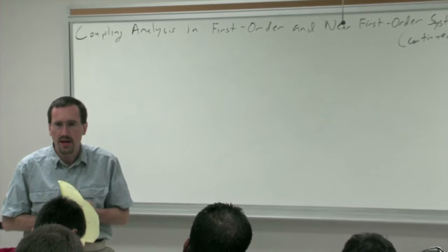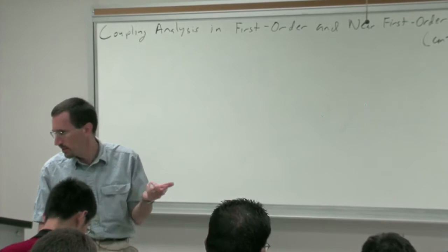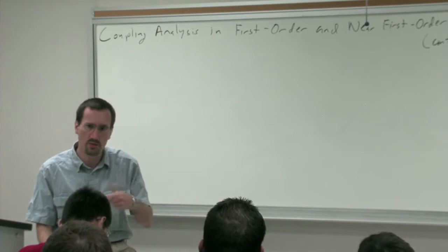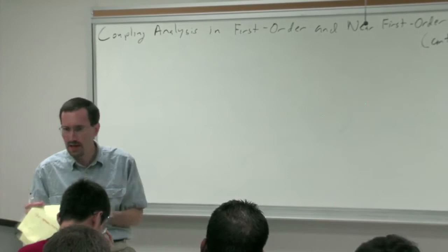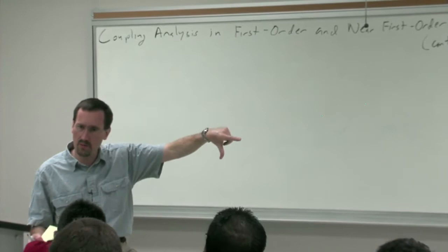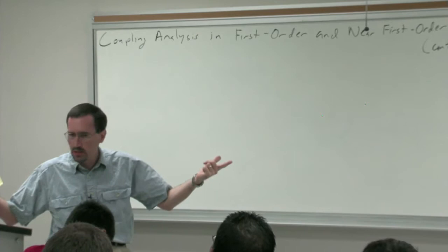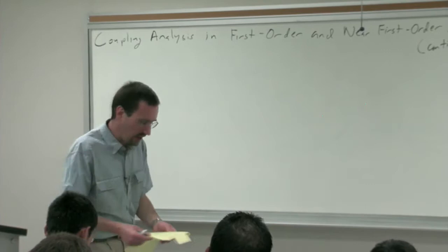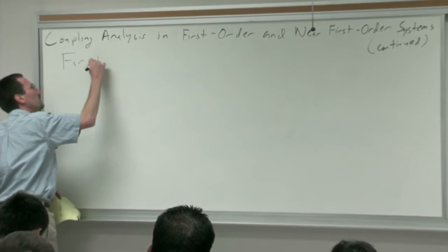We've already talked about multiplets where you have all of the same type of coupling, like a quartet or a septet. Now I want to talk about multiplets where we have different coupling constants to different types of protons. If you have different types of protons but the coupling constants are the same, it's going to be a quartet and you can analyze it as a quartet. But now we'll look at first order coupling analysis where we have different coupling constants.